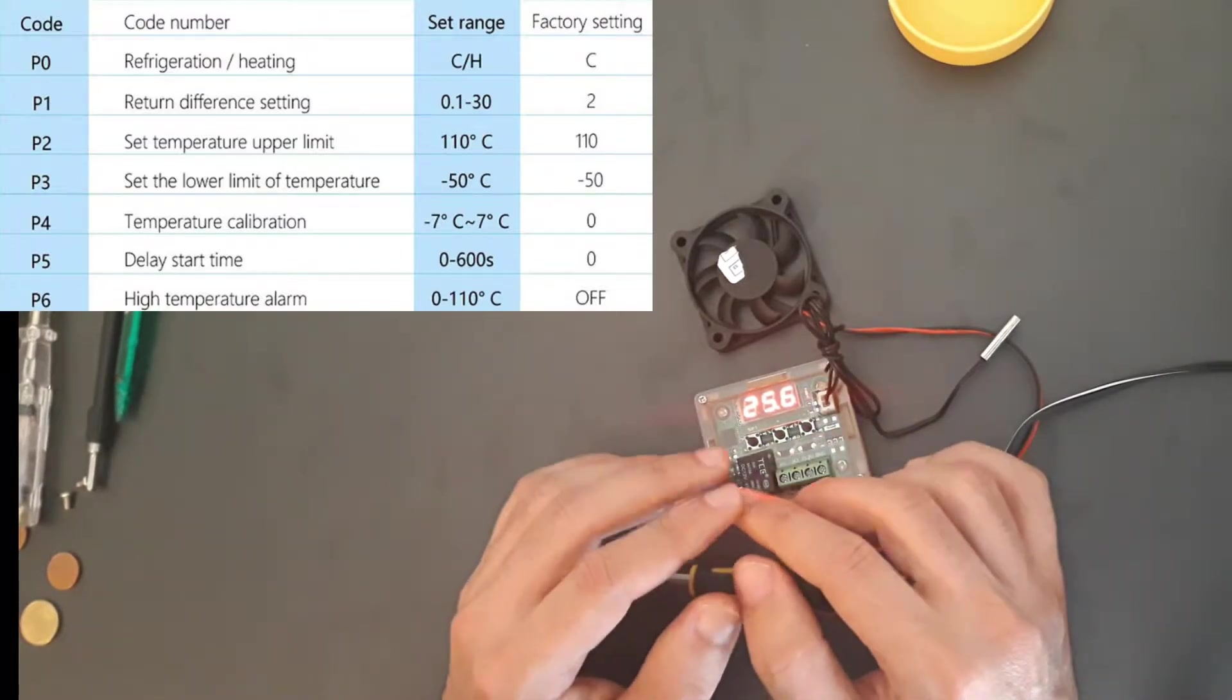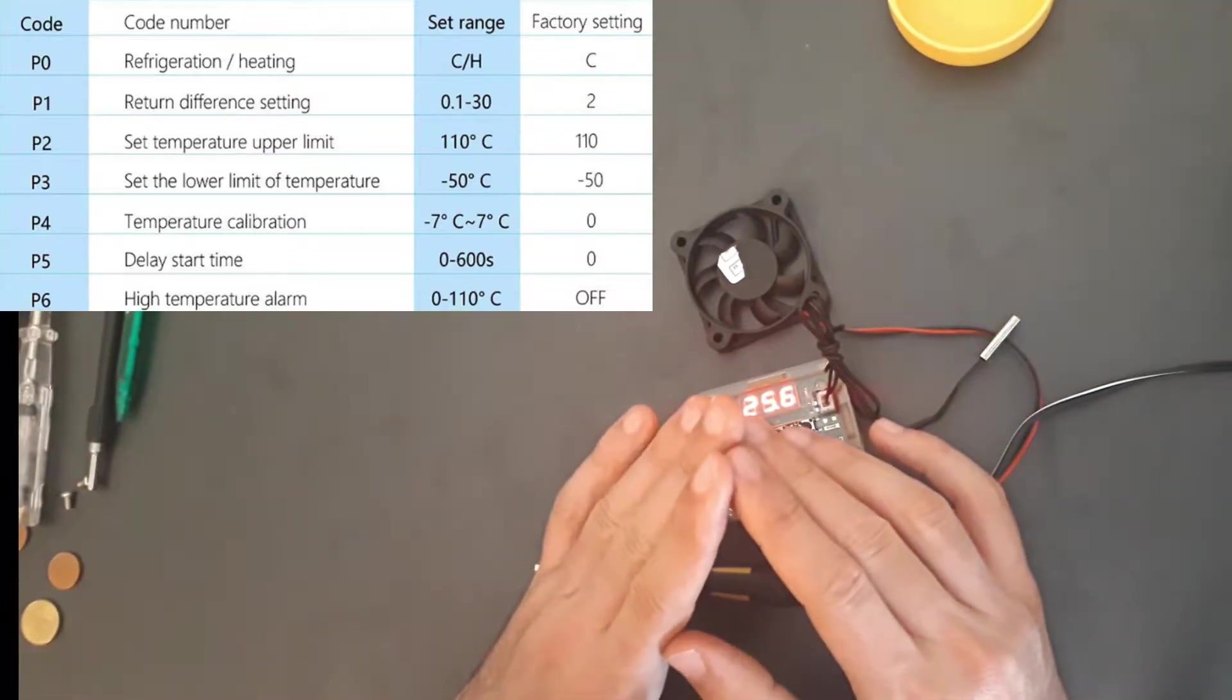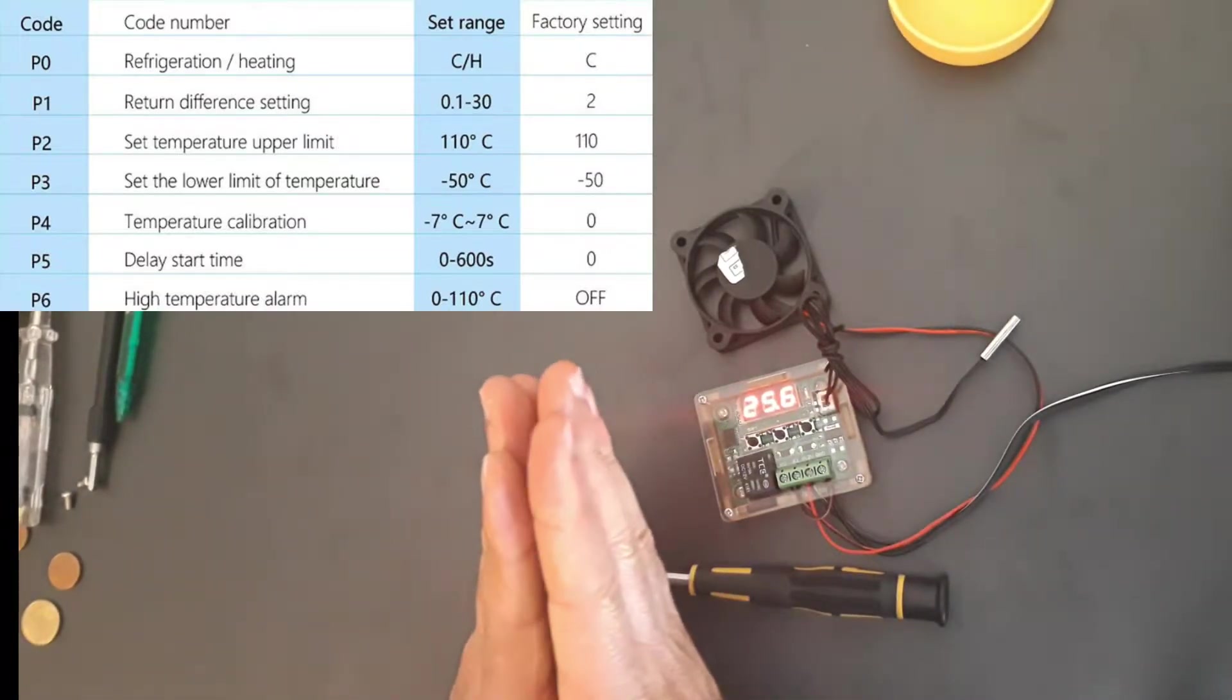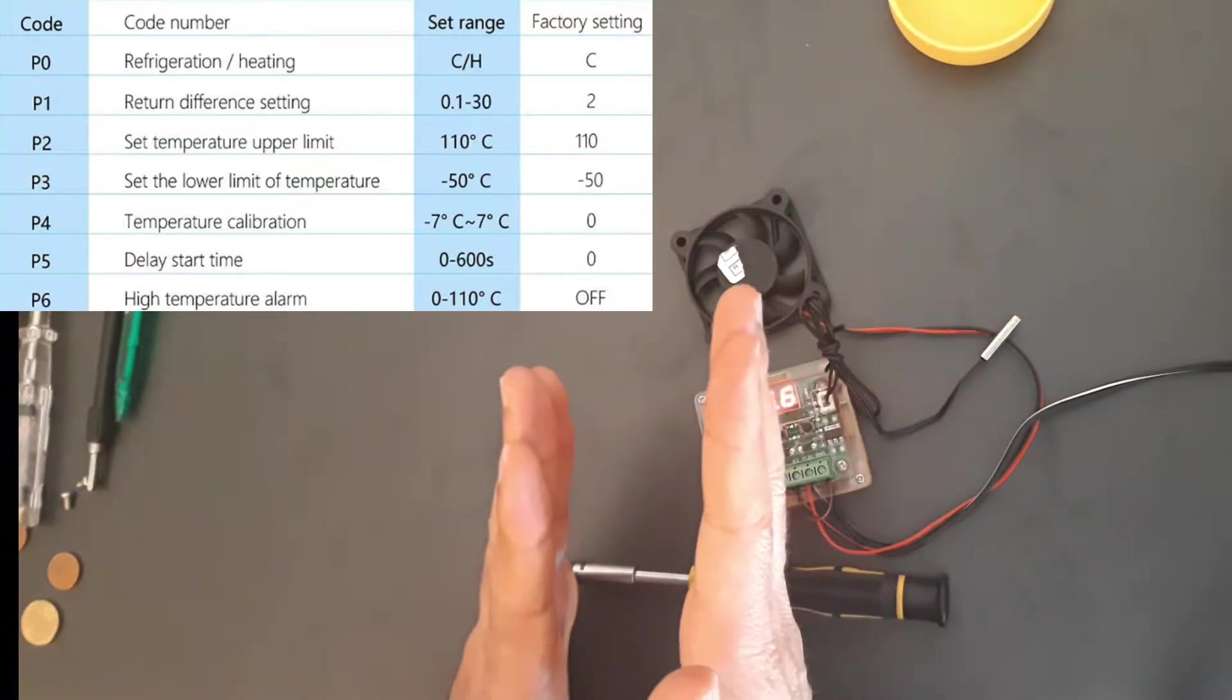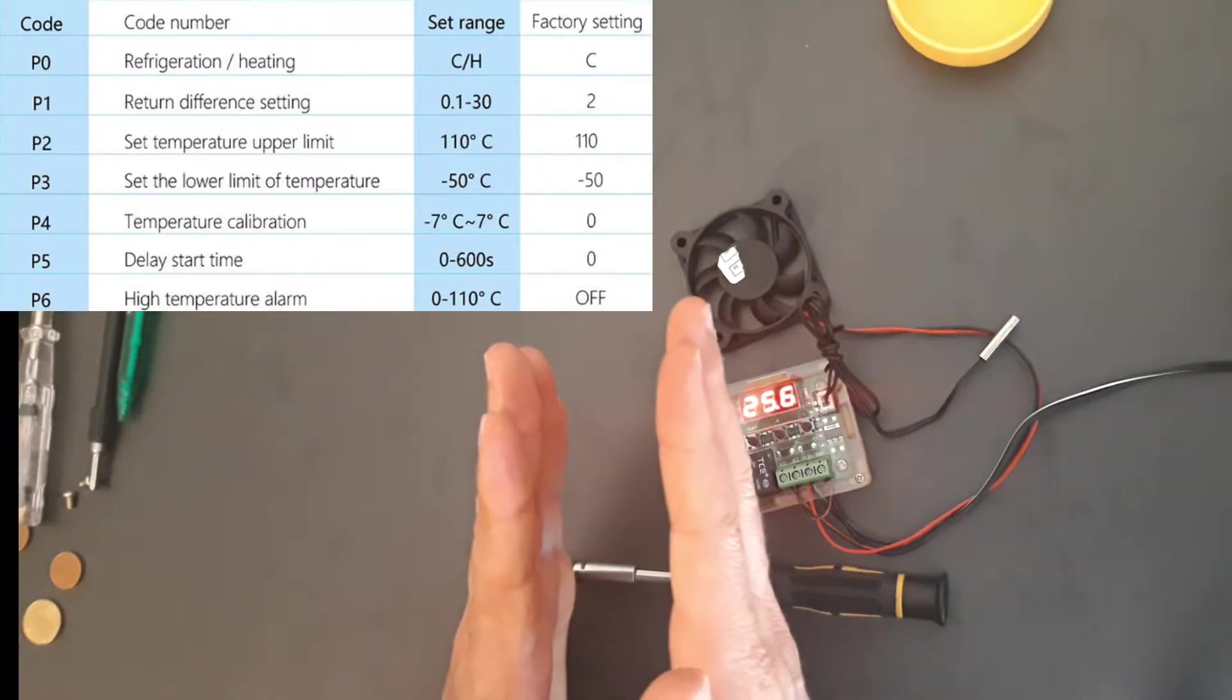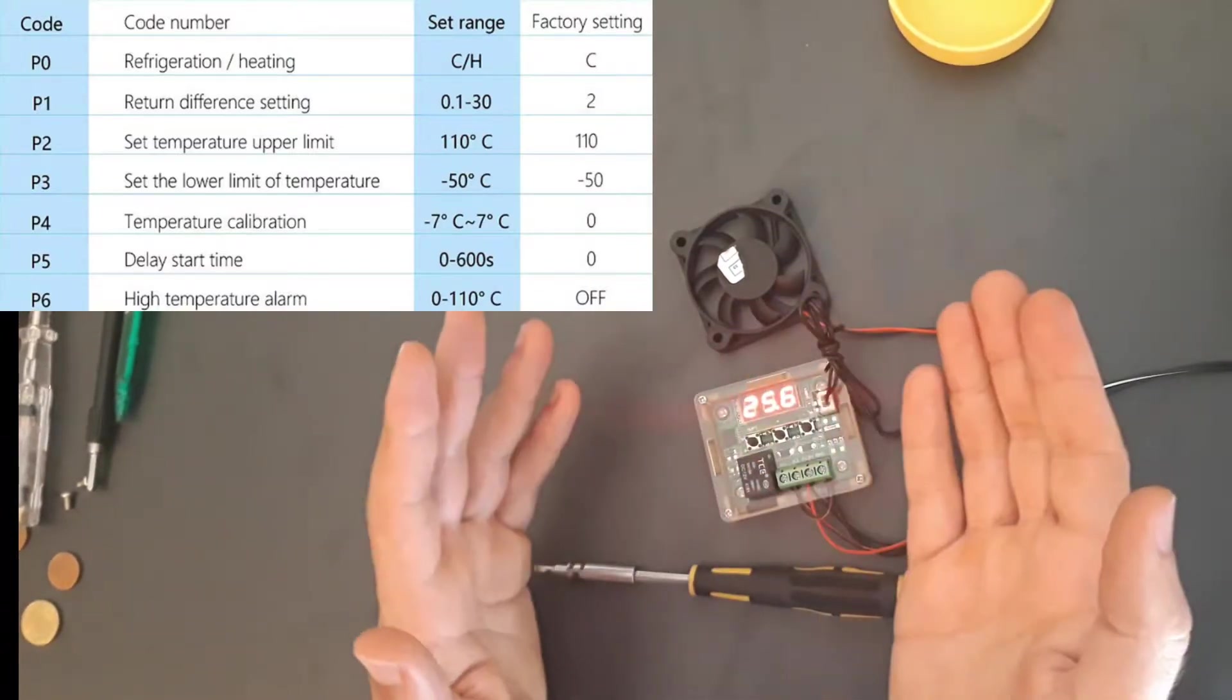For example, if you set this to let's say 30 degrees, and as it goes down when it reaches 30 degrees, it won't shut down immediately. If you set a return, you can say return after two degrees. So it will lower two degrees in temperature, then only after it will shut down.